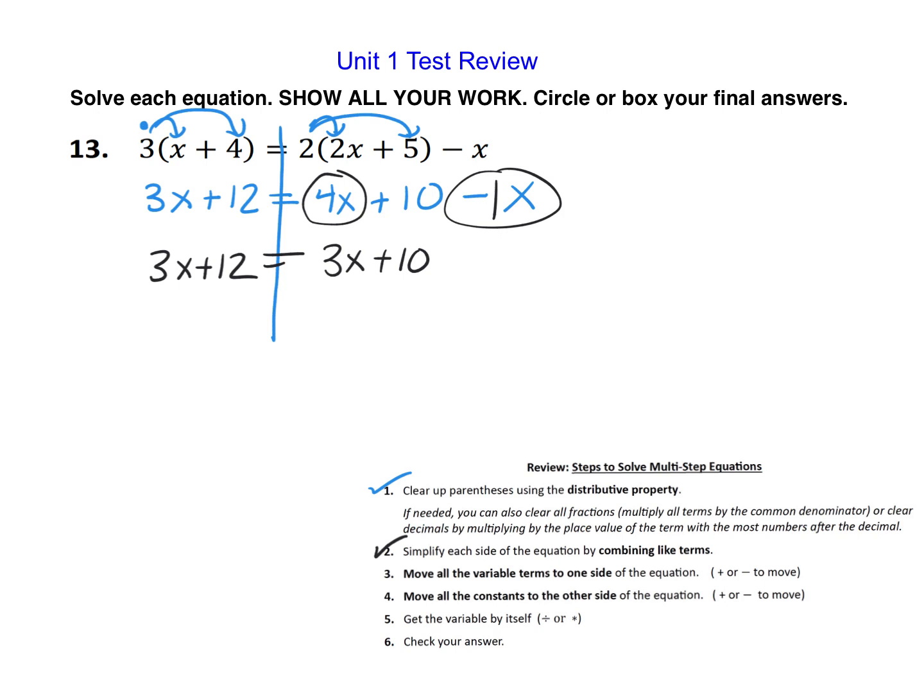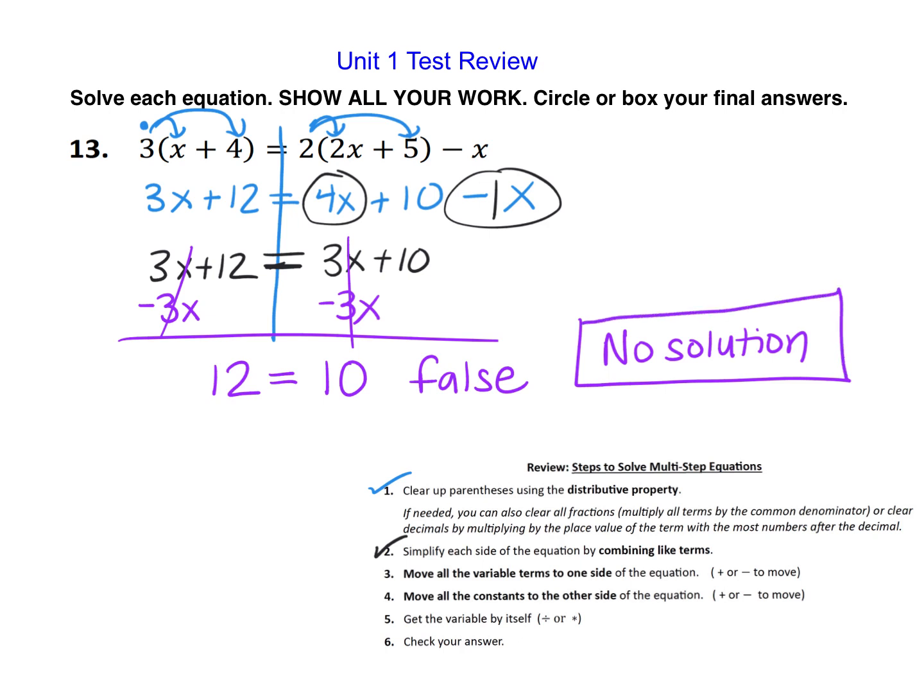Now it's time to get all the variables to one side. To get the 3x to the other side, we have to do the opposite of positive 3x, which is negative 3x. So I'm going to subtract 3x on both sides. That way it'll cancel out on this side, leaving me 12. And it actually cancels over here too because 3x minus 3x is 0. So I have 12 equals 10, which we all know is false. If our variables disappear and we get a false statement, that means this equation is never true for any value of the variable. So we say that the equation has no solution. See example 4 in your 1.4 notes for more examples of the special cases. An equation can have either no solutions, infinitely many solutions, or most commonly, it will have one solution.